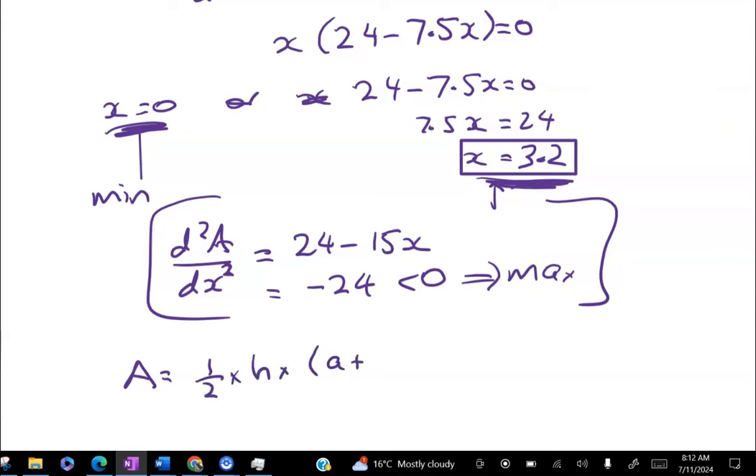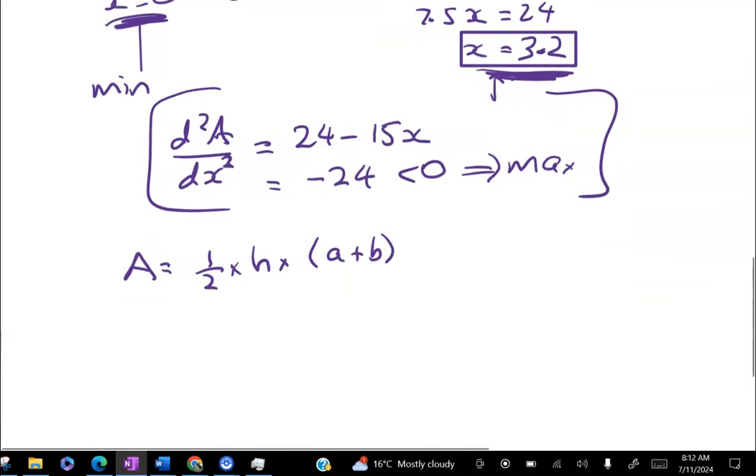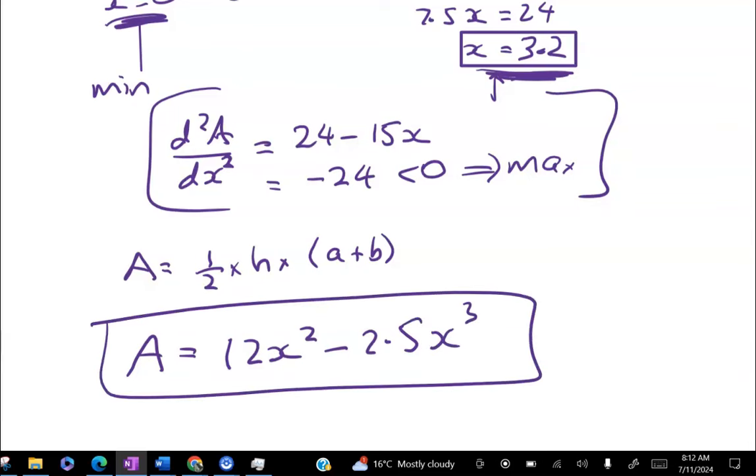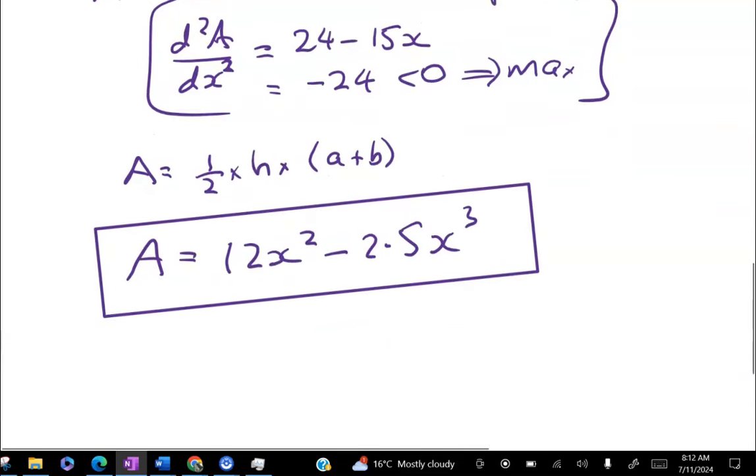So two ways to do this. We can either go back to year 9 and work out ½ times h times the average of a plus b. Or we can just use our expression for A from above, which simplified to give me 12x² - 2.5x³. I reckon that's going to be faster.